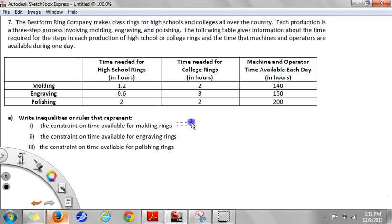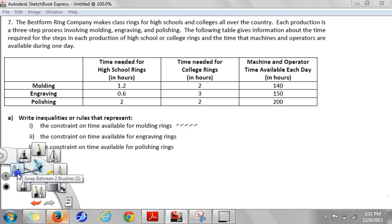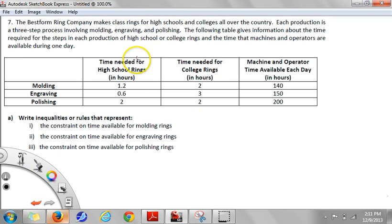First we'll do the constraint for molding. And our variables are going to be the high school rings and the college rings. So I'll use H for the high school rings, C for the college rings. These are all of our totals, our limitations, and these are the titles of each of our constraints. Okay, so the constraint for molding, we've got 1.2 hours for high school and 2 hours for college. And this is a limitation where we have to say less than or equal to this amount.